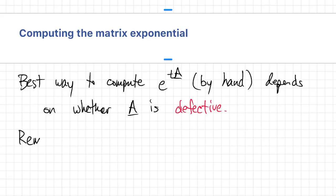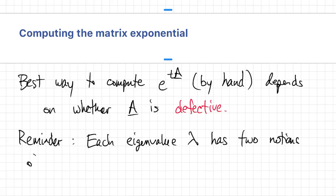Now we did encounter this term before, but let me remind you. We said that every eigenvalue carries two types of multiplicity. There's the algebraic multiplicity, which is the root multiplicity of λ in the characteristic polynomial.